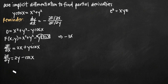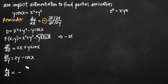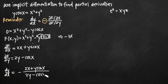Now we plug these into our formula. Don't forget the negative sign — it's part of the formula and super important. So dy over dx equals negative partial derivative of F with respect to x over partial derivative of F with respect to y, which gives us negative (2x plus y sine of x) divided by (2y minus cosine of x). That is our partial derivative of y with respect to x.